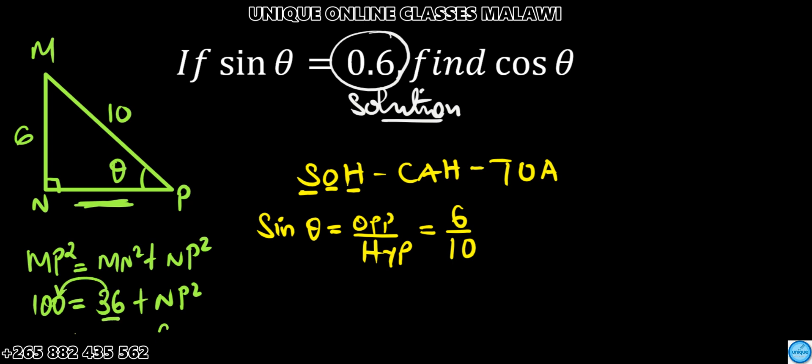So we're going to have 64 = NP². To find the value of NP, just square root both sides. Square root of 64, that's 8. It means here we're going to have 8.